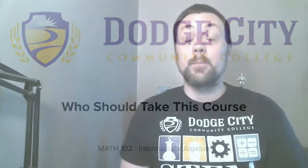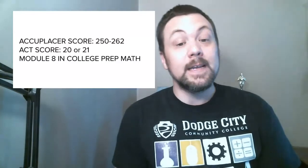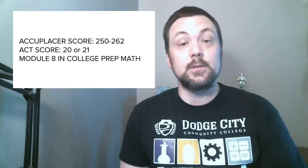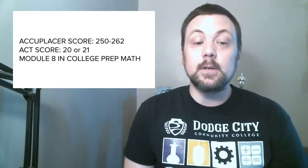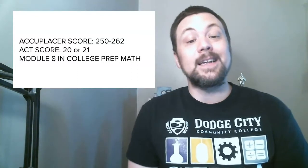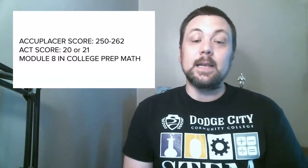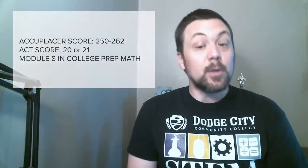This course is designed to prepare students for Math 106 College Algebra. Any student meeting the following prerequisites may take Math 102 Intermediate Algebra: a student with an Accuplacer NG score between 250 and 262, a student with an ACT math score of 20 or 21, or a student who completed at least through module 8 in college prep math but not all 12 modules. You might also consider taking this course as a math refresher if you placed into college algebra but don't feel quite ready for it.